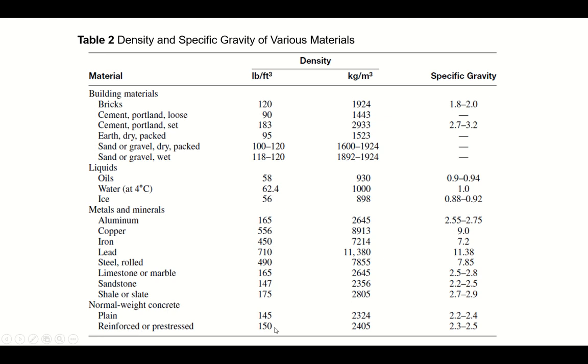Similarly, Table 2 shows the density and specific gravity of various materials. For example, reinforced concrete has a density of 150 pcf, pound per cubic feet, and its specific gravity varies between 2.3 and 2.5. So you can pick the density and specific gravity of your concrete material and you can use it in the calculation to calculate the dead load of the structural elements.